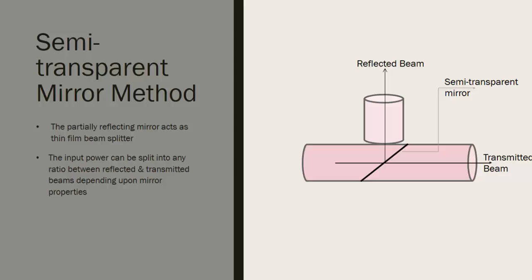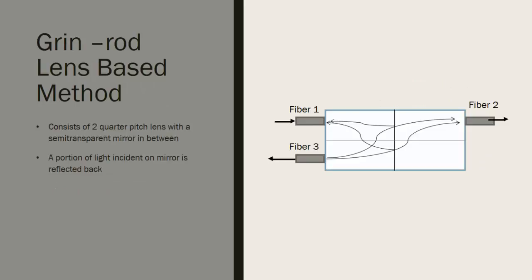In the semi-transparent mirror method, the semi-transparent mirror acts as a beam splitter. It allows some portion of the light to pass through it and reflects the remaining portion. When the input signal strikes this mirror, some portion of the light is transmitted through it towards one port, and the rest of the light is reflected towards another port. The input power can be split into any ratio between reflected and transmitted beams, depending on the mirror characteristics.